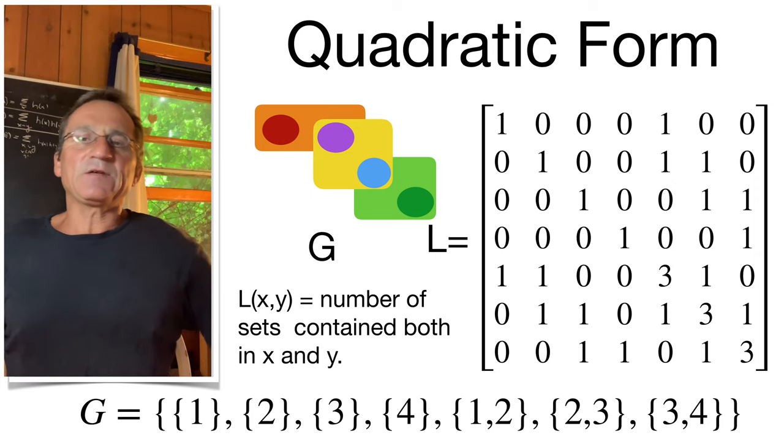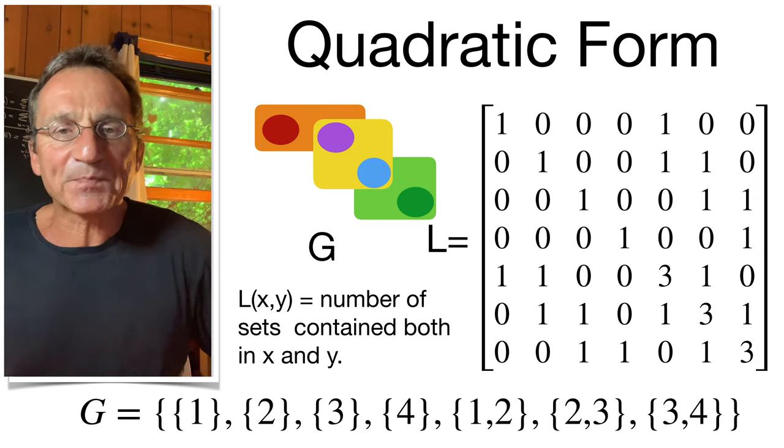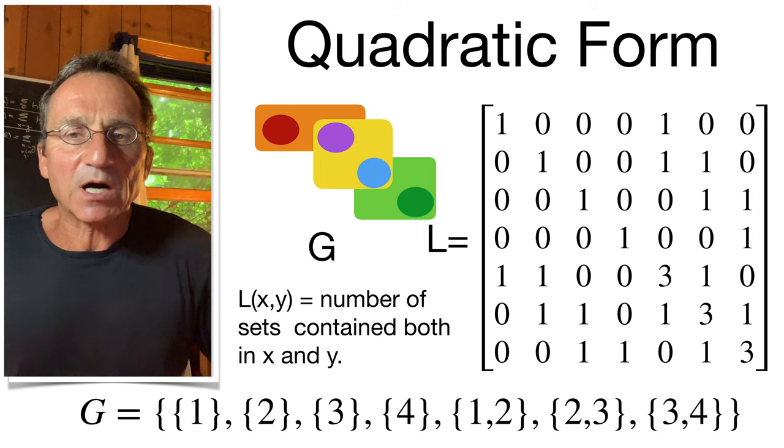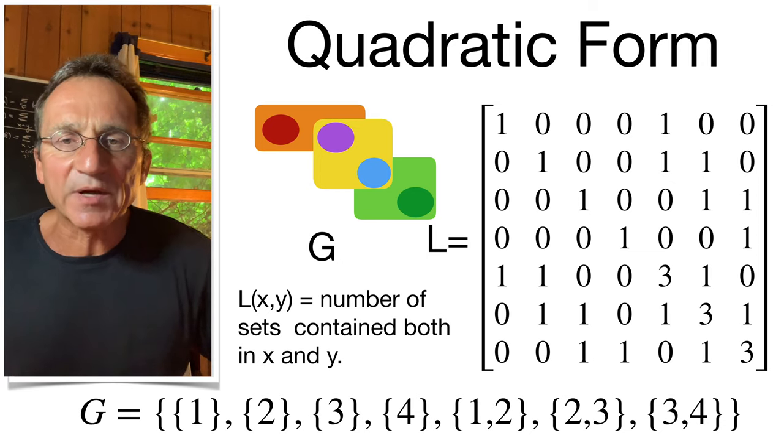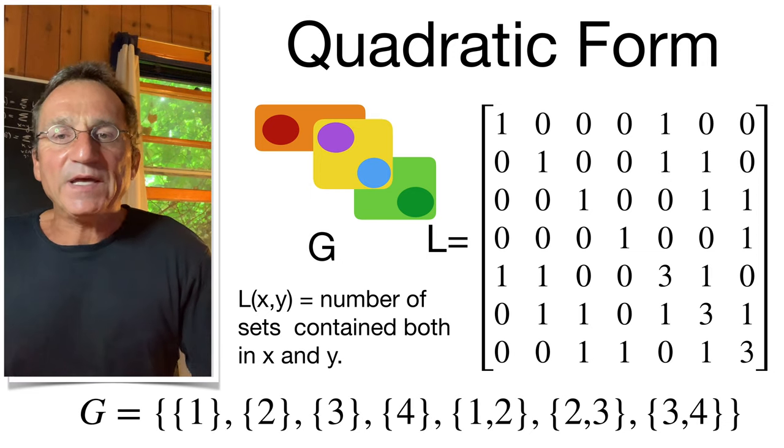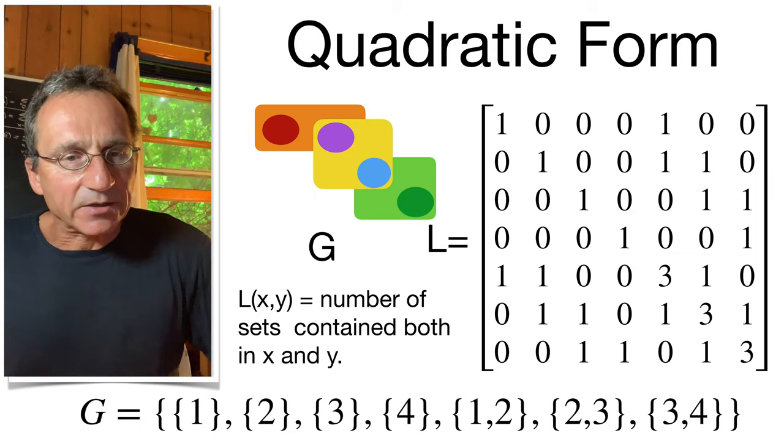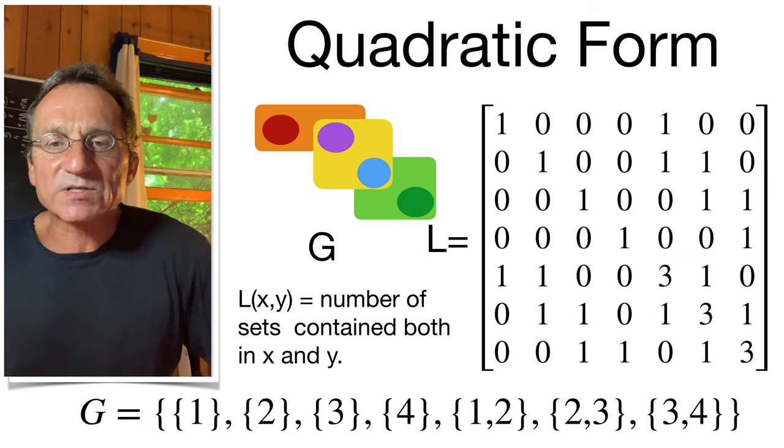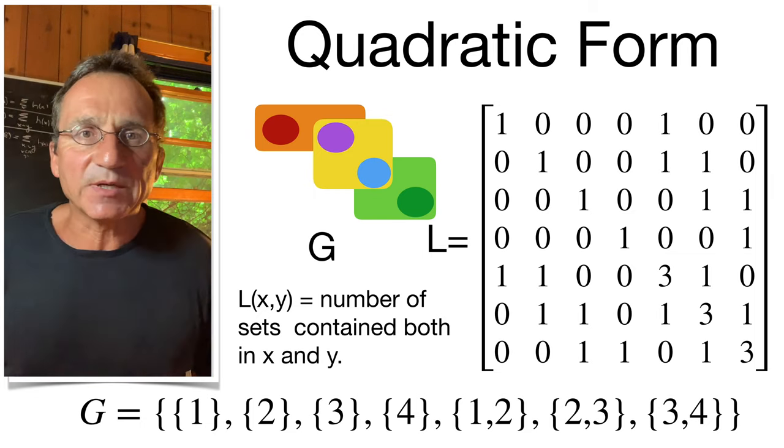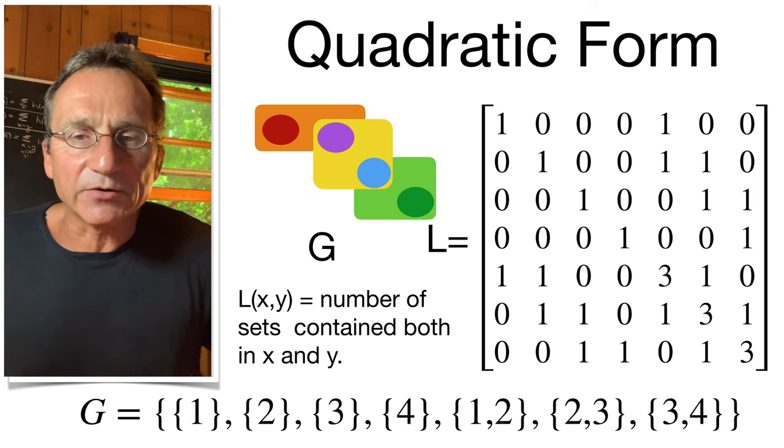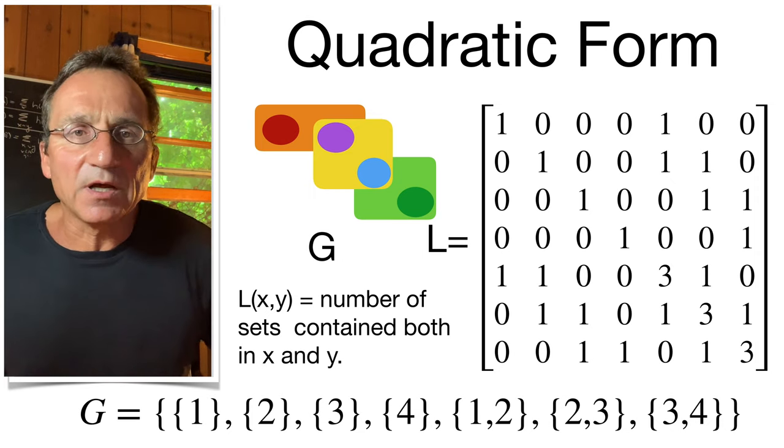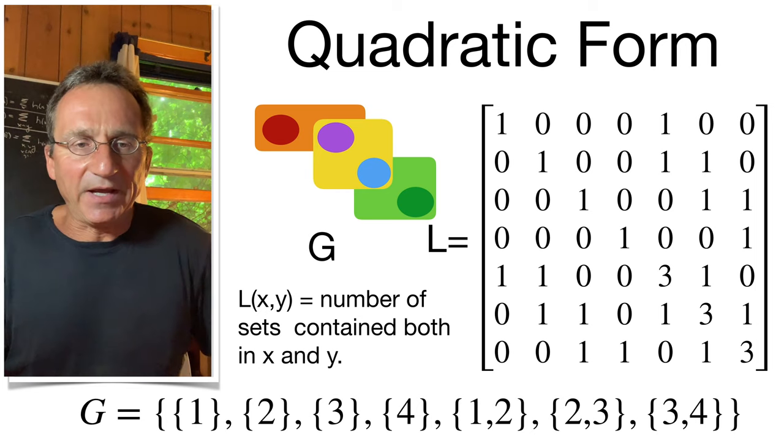The set of sets G defines a quadratic form L. The entry Lxy is defined as the number of common subsets of X and Y. It turns out that this matrix is always positive definite, has determinant 1, and that its inverse is conjugated to itself. It's a property which is shared with symplectic matrices.